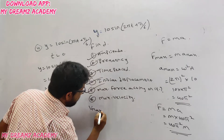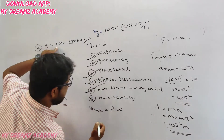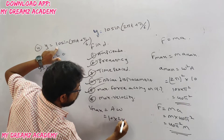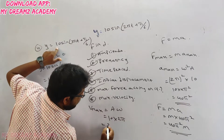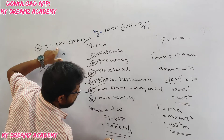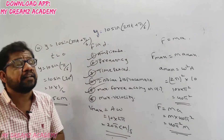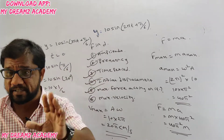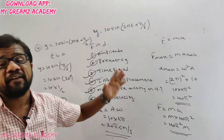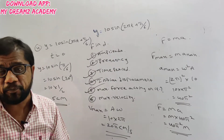Maximum velocity formula is v_max = Aω. Amplitude A = 10 and ω = 2π, so v_max = 10 × 2π = 20π centimeters per second. These are the six possible questions when a general SHM equation is given.